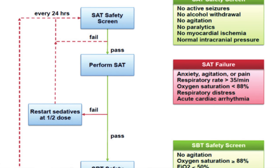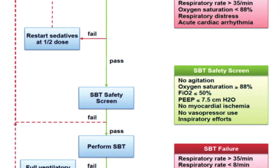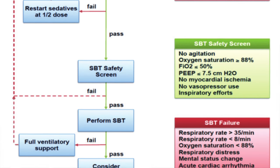Now there are different criteria, and this will be listed on your charting system, or maybe you have a diagram or something. I have a link that I will put down below of a really helpful diagram that tells you the criteria that would fail someone from a spontaneous awakening trial.